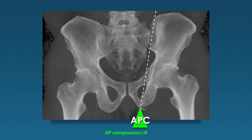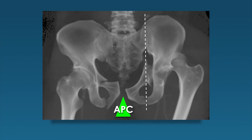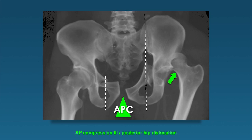Another APC type 3 example with a slightly off-midline force disrupts both the symphysis and the obturator rings bilaterally. We see the force going all the way through the SI joints and tearing off the transverse process of L5. We have posterior injuries involved with that broader anterior force and obturator ring injuries on the patient's right side. Note the hip on the left side—posterior dislocation—which goes along perfectly with this scenario: APC type 3 with posterior hip dislocation.